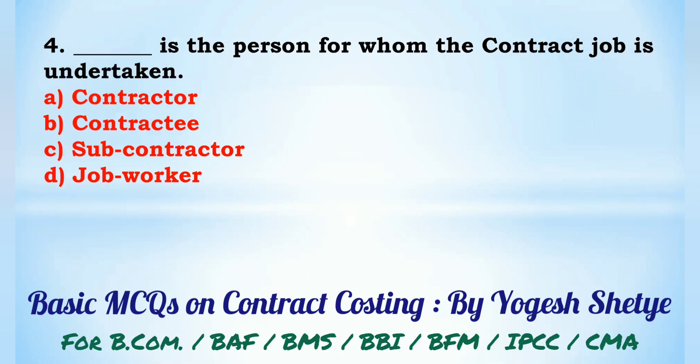Question 4: Dash is the person for whom the contract job is undertaken — (A) contractor, (B) contractee, (C) subcontractor, (D) job worker. The contractee is the person for whom the contract job is undertaken. Answer: B.